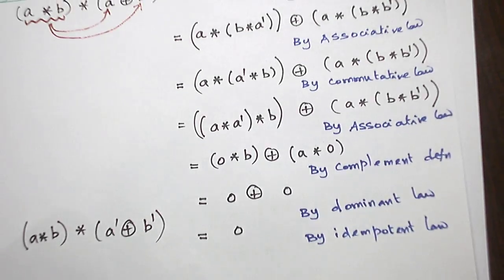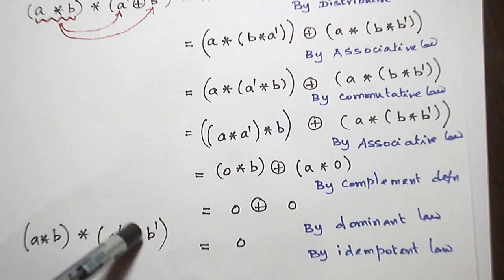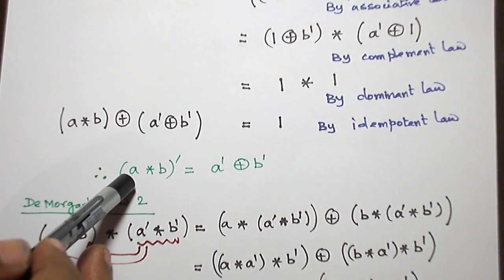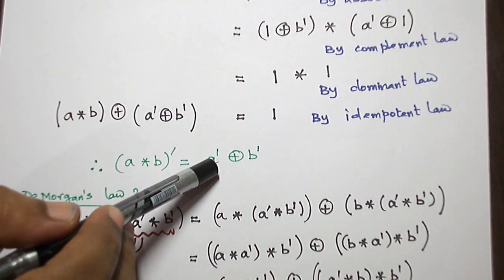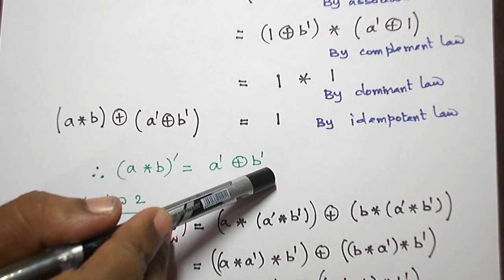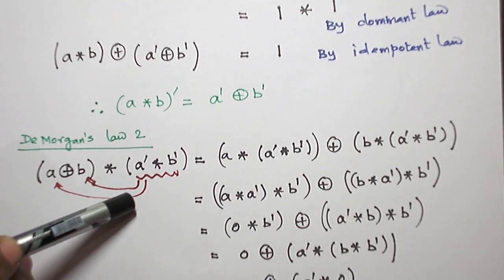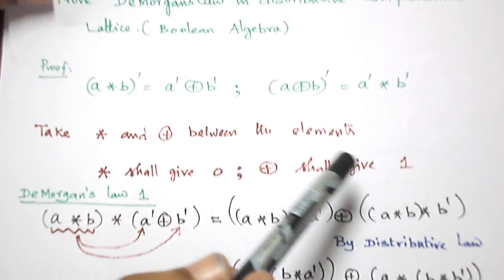So what we got is: the plus between these two elements is 1, and the star between these two elements is 0. So these two elements are complements of each other, which is mathematically written as: A star B whole dash equals A dash plus B dash. This proves the first De Morgan's law.